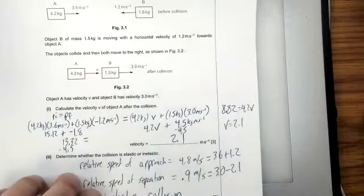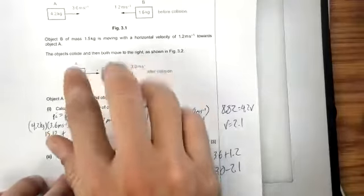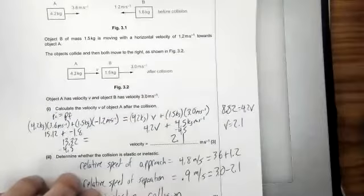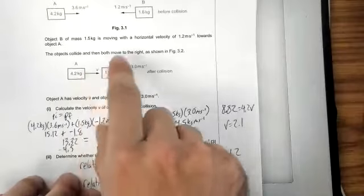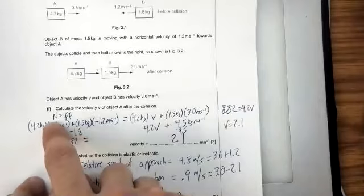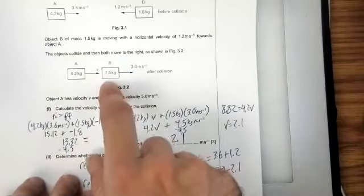We would have to be given the velocity of the other object in order to solve this. Because there's almost infinitely many combinations of velocities these things could have that would still conserve momentum. So to solve for one of them, we kind of have to know everything else.